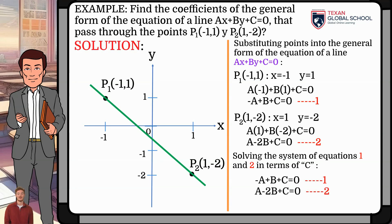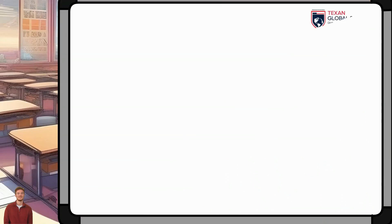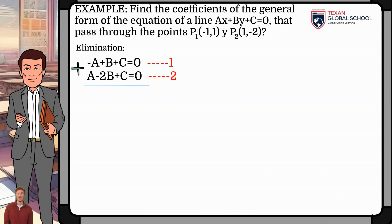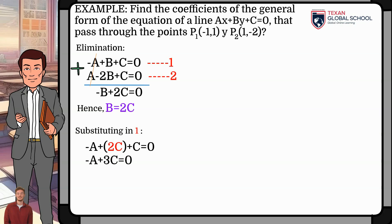Solving the system of equations 1 and 2 in terms of c, let us begin using the method of elimination seen in previous classes. By directly adding the equations to cancel a, the result is −b + 2c = 0. Therefore, b is equal to 2c. Now, substituting the value obtained into equation 1, the result is −a + 2c + c = 0. Therefore, a is equal to 3c.